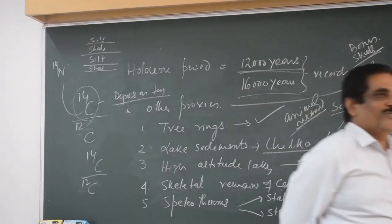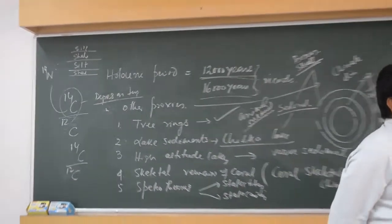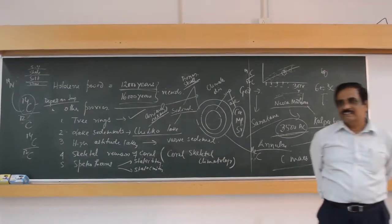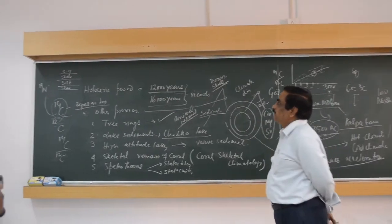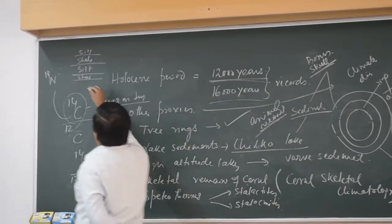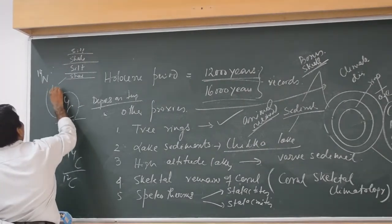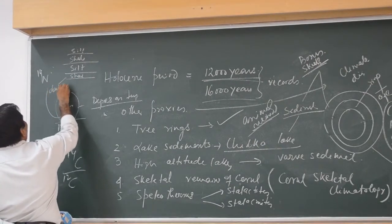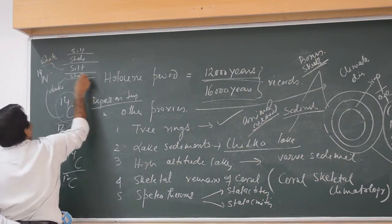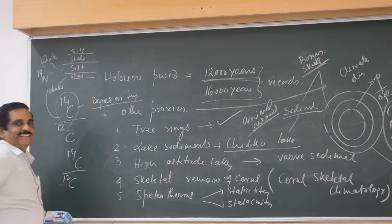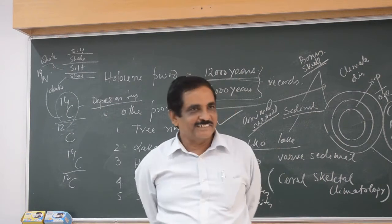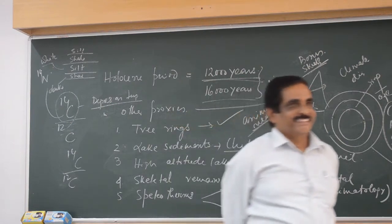What do these layers imply? The cell layer is darker, while the sheath is white. What does the dark cell indicate — winter, cold, or something else?